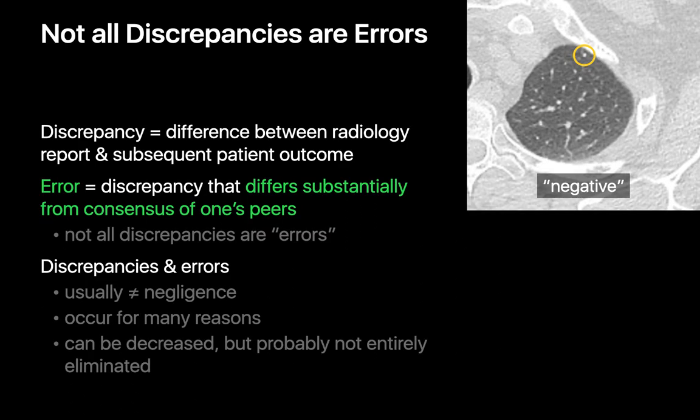We typically use the term discrepancy to describe any situation where what appears in a radiology report is different from the subsequent outcome. We use the term error to describe discrepancies that differ substantially from what the consensus of our radiologist peers would have been.